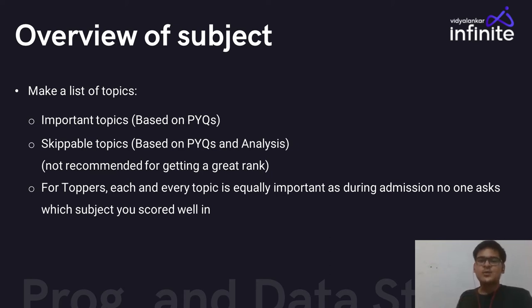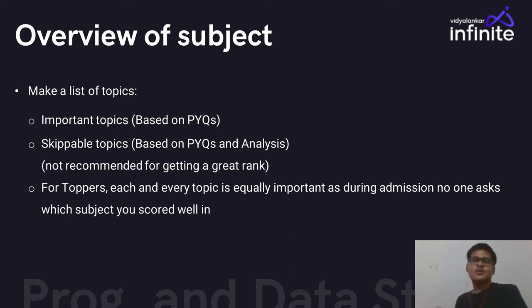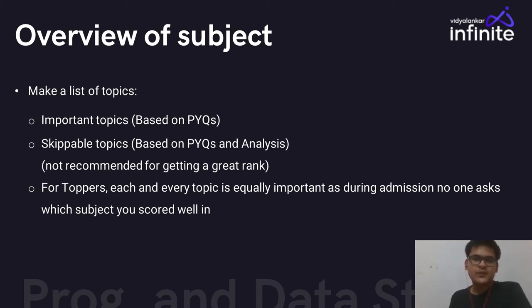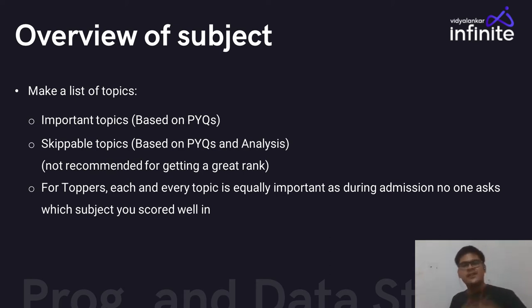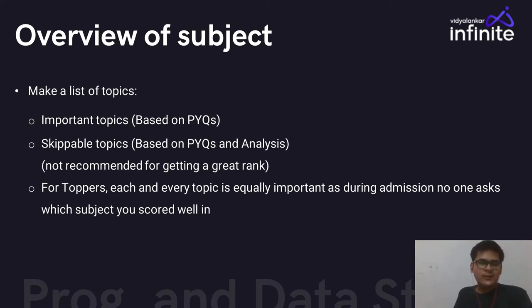If you believe in luck, you can leave certain topics and hope GATE never asks those questions. But if you're aiming for a great rank, each and every topic should be equally important. For toppers, each topic is equally important — during admission, no one asks which subject you scored well in. Lots of people ask me what the important topics are, or if they can skip certain topics. But if I say yes and GATE asks from those topics, I won't be able to help you get admission. Always focus on thorough preparation of each and every topic.